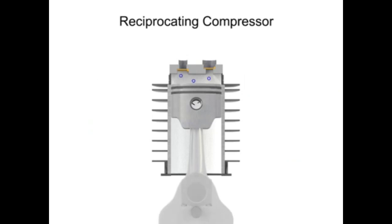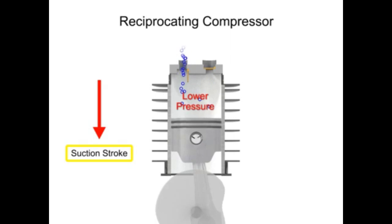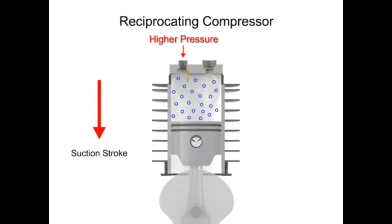As the piston moves downward on its suction stroke, the volume increases within the cylinder. As the volume increases, the pressure within the cylinder becomes lower than the inlet air pressure. This allows the higher pressure outside air to push open the inlet valve and allow more air into the cylinder.